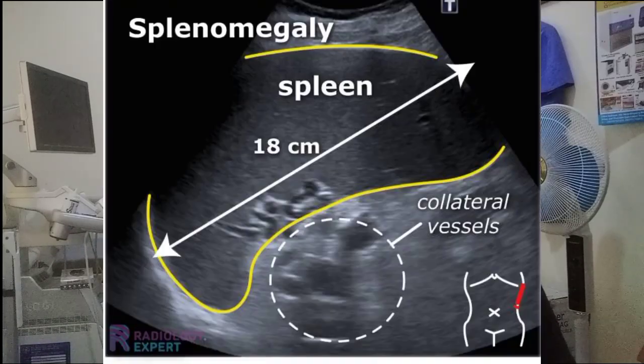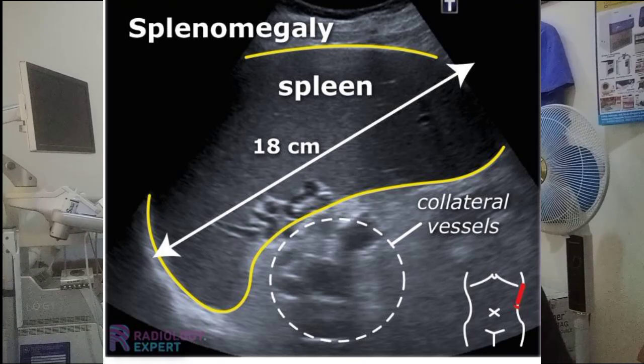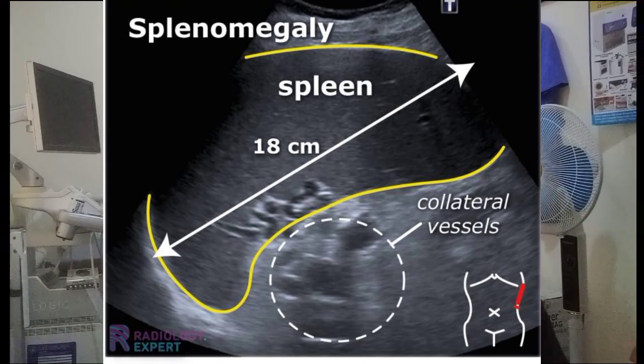This is an image of splenomegaly and tortuous tubular dilated splenorenal collateral veins in the region.